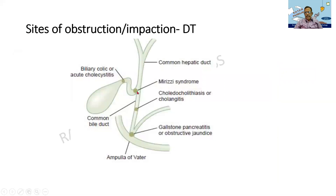These are the sites of impaction. It can be at the head or the neck of the bladder, or it can be in the common bile duct, or it can be in the ampulla of Vater. They produce various syndromes, which are again important from the clinical point of view.